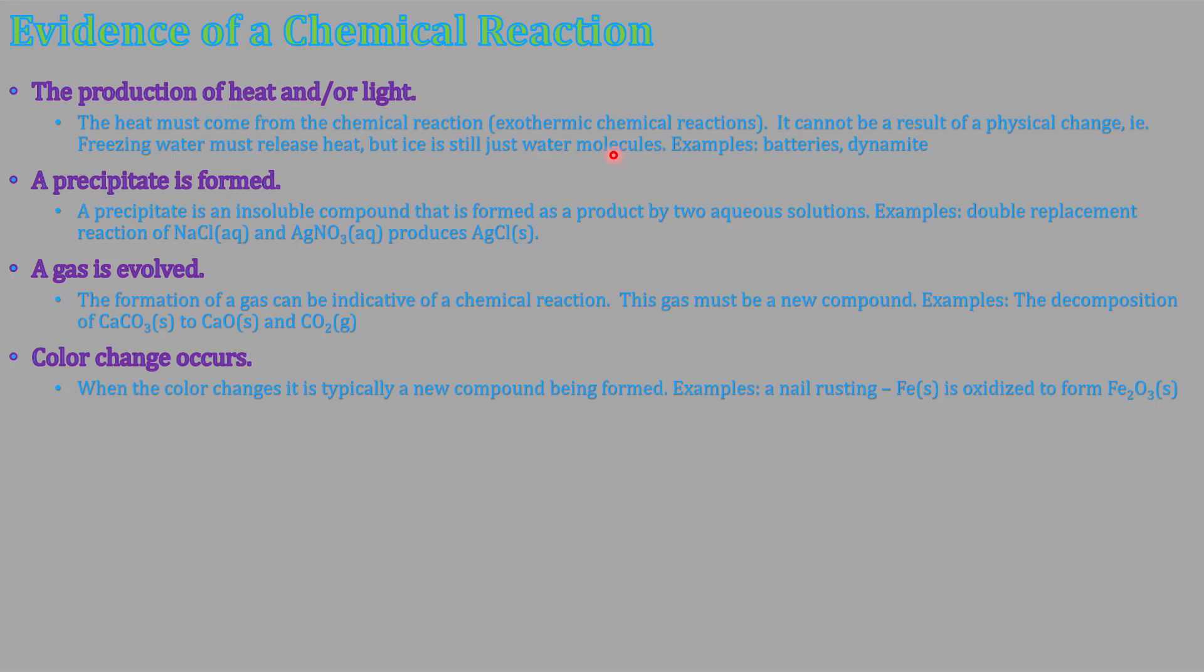A precipitate is formed. A precipitate is an insoluble compound, so that's an example of a chemical reaction. A gas is evolved.